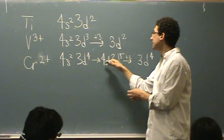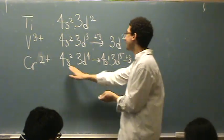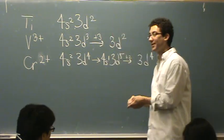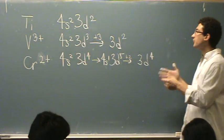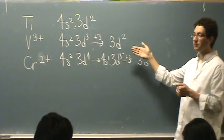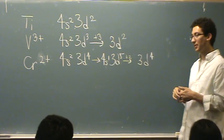Okay, and then it doesn't matter, you'd get the same answer. Because if you lost two from here, you'd still get 3d4. So these are what I would call like a d4 or a d2, the number of electrons you have to play with.